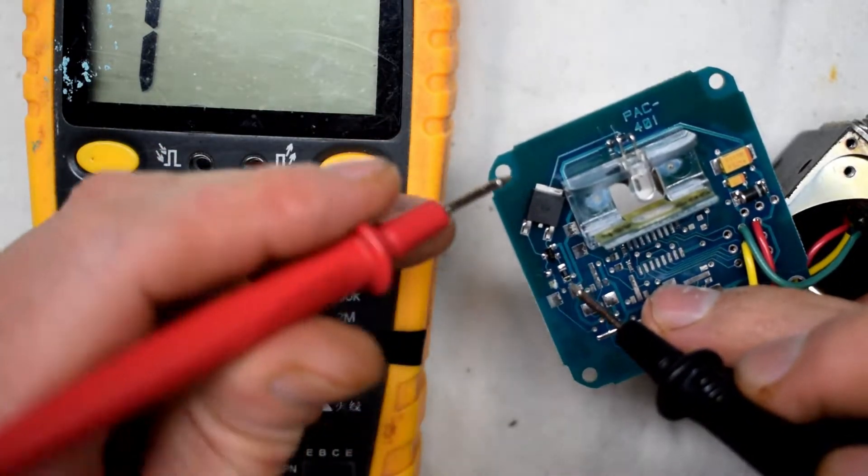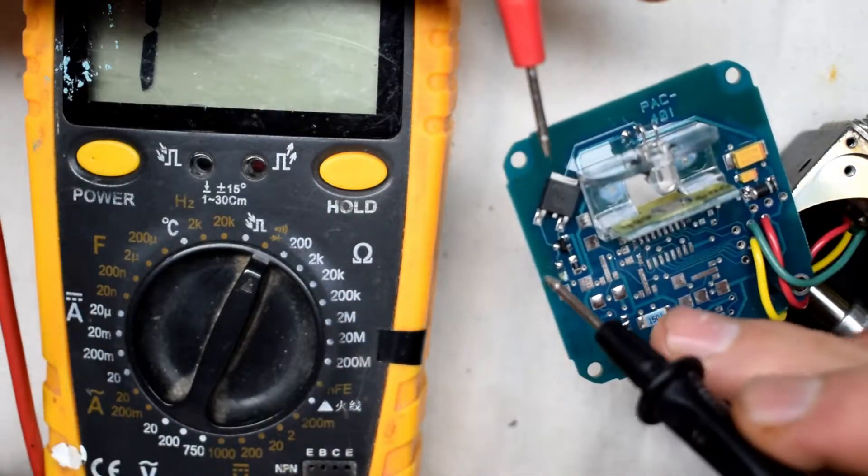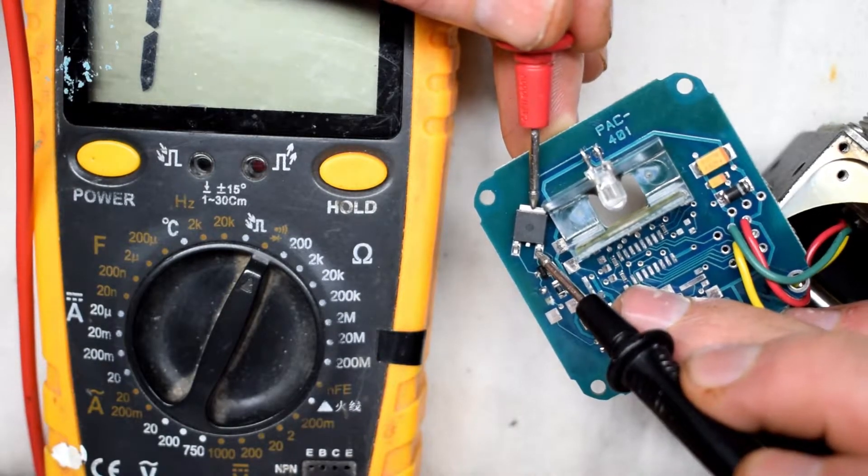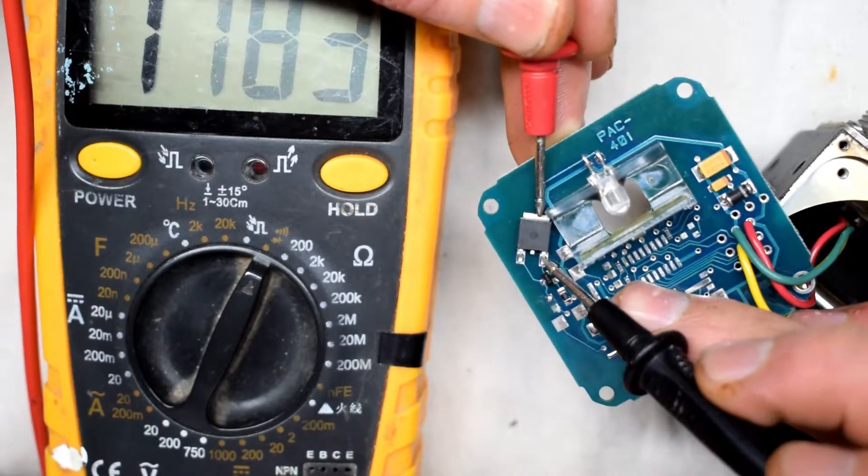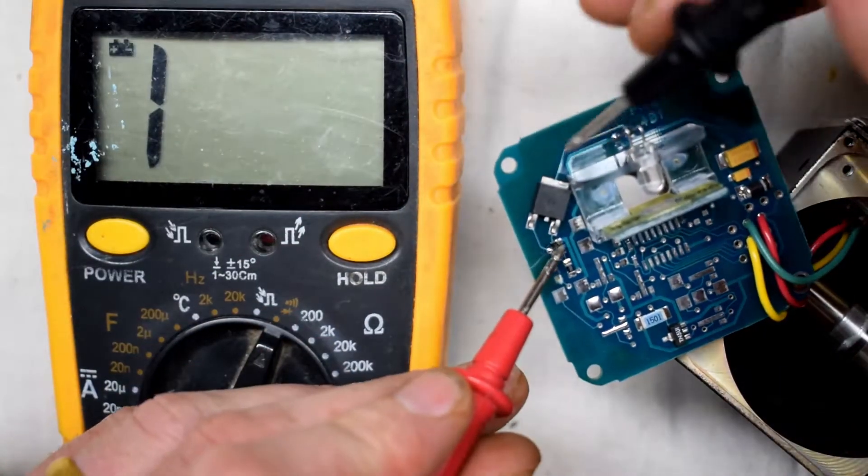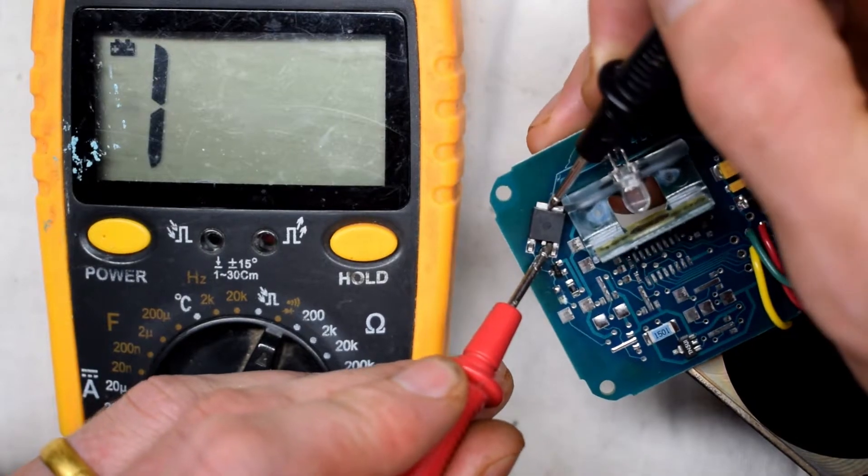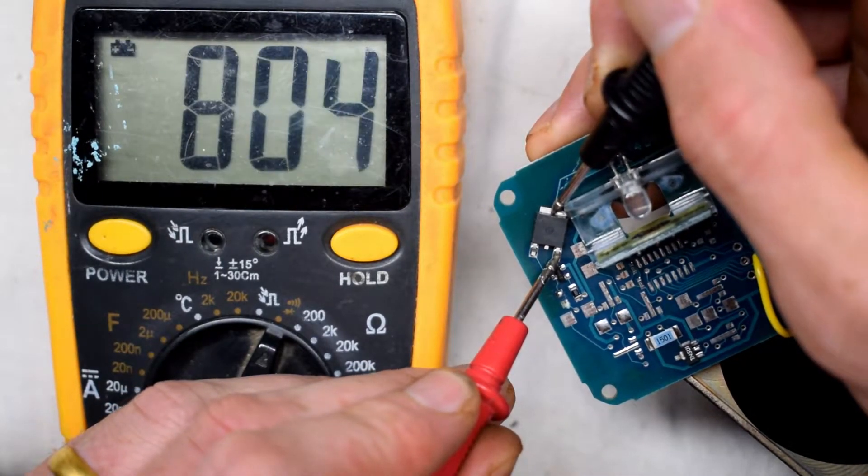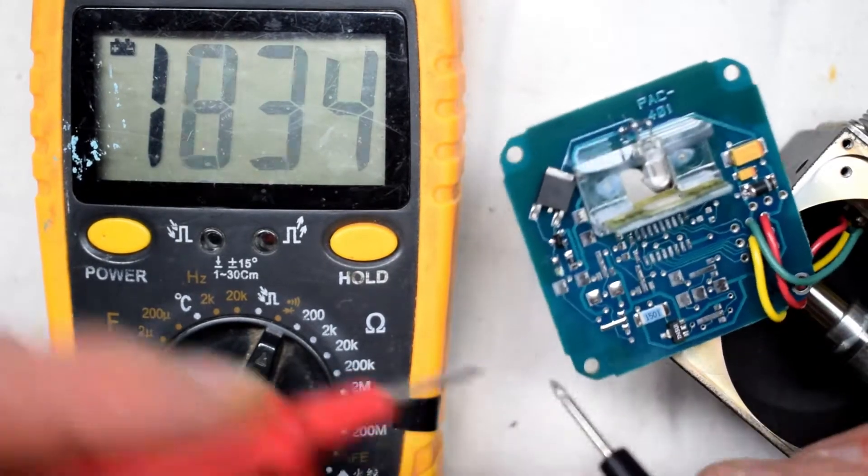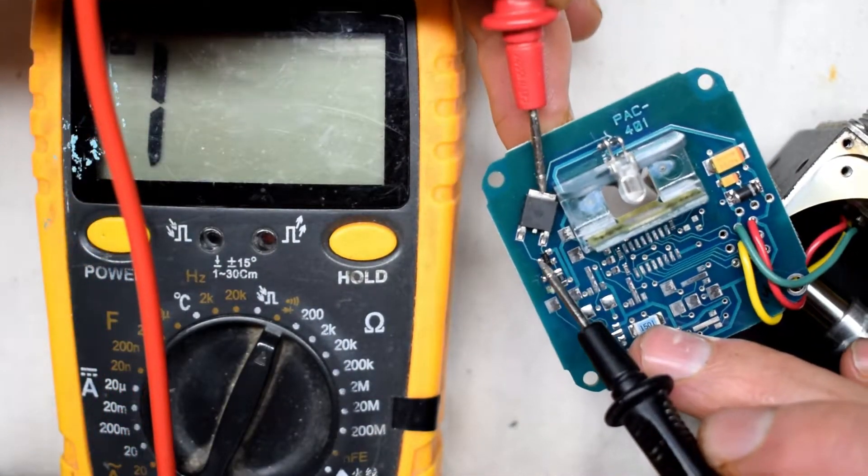So put the positive to the drain and negative down and it should read like this. Should be, should be open. If you reverse the leads, you should get continuity. And if you're reading continuity this way,